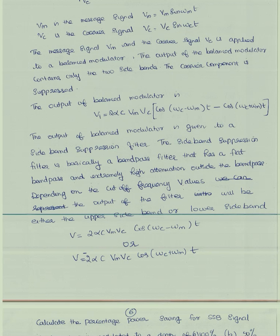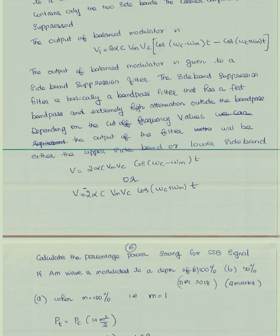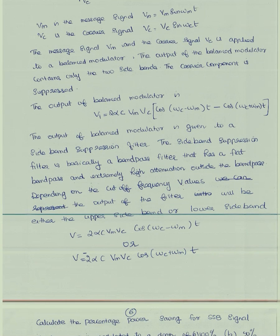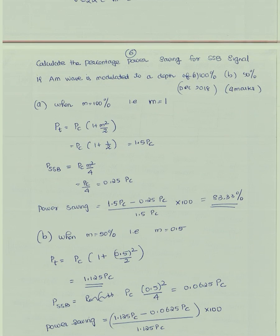The bandpass filter separates the sidebands. The upper sideband output is v = 2α·Vc·Vm cos(ωc − ωm)t, or the lower sideband is v = −2α·Vc·Vm cos(ωc + ωm)t. To calculate the percentage power saving for SSB: if the AM wave is modulated to a depth of 100%, the modulation index m = 1.